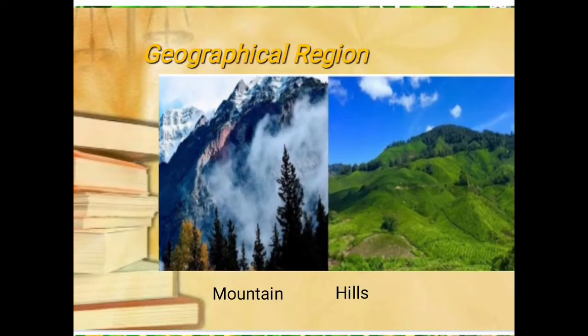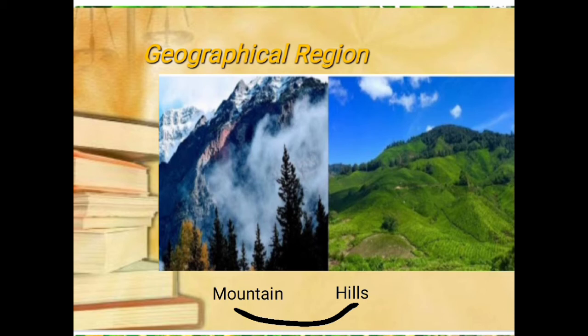Number one: Mountain. Mountains are the high areas of the earth, and mountains are higher than hills. اب اگر ہم mountain اور hills کی بات کریں تو mountains جو ہیں وہ بڑے ہوتے ہیں، mountains پہ climbing کرنا difficult ہے، وہاں کی جو زمین ہے وہ بہت زیادہ steep اور rocky ہوتی ہے۔ But hills جو ہیں وہ mountains سے چھوٹے ہوتے ہیں اور hills پہ آپ climbing کر سکتے ہیں۔